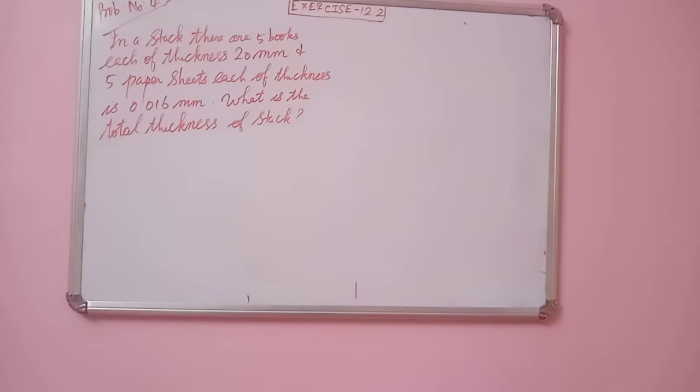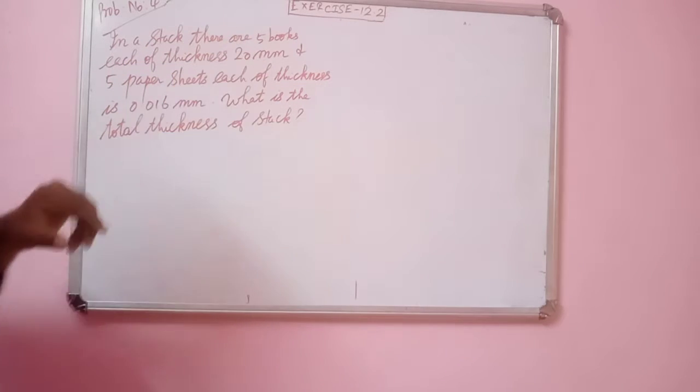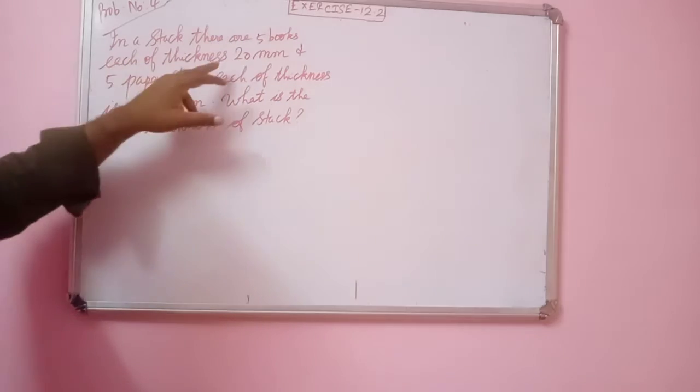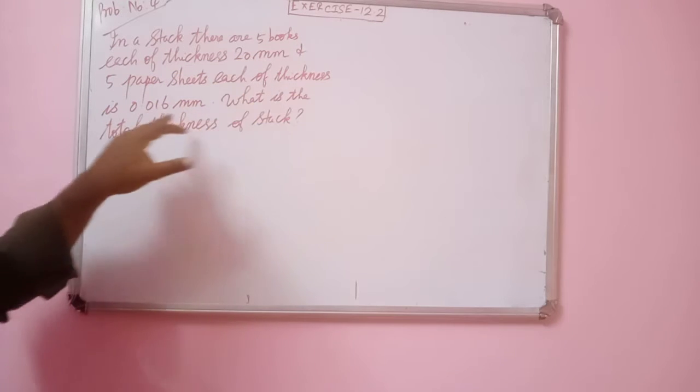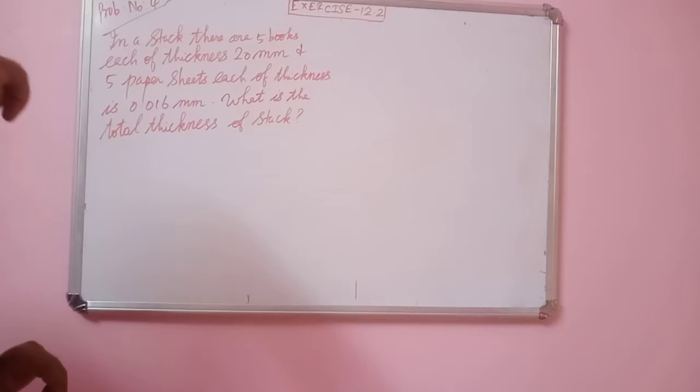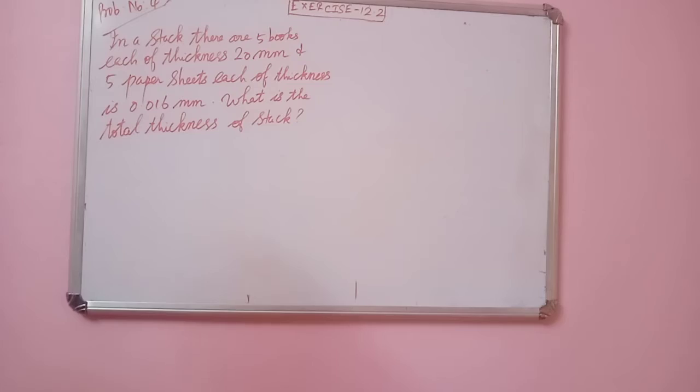In exercise 12.2, problem number 4: In a stack, there are 5 books, each of thickness 20 mm, and 5 paper sheets, each of thickness 0.016 mm. What is the total thickness of stack?